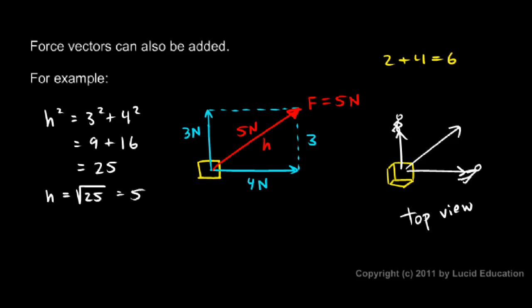Note that 3 plus 4 is not equal to 5. But 3 newtons up and 4 newtons to the right is equivalent to 5 newtons in this direction. Adding vectors is done always taking the direction into account.